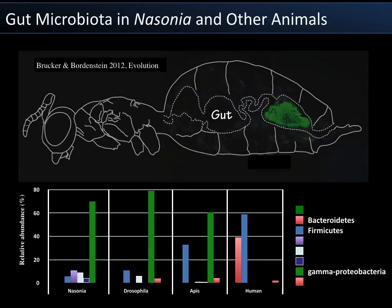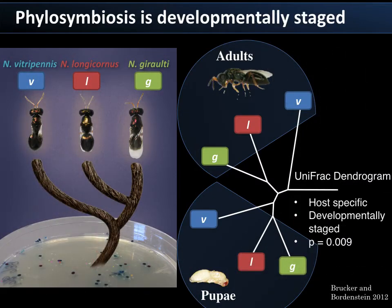Nasonia is what I'll spend the rest of the time discussing. A cross-section of the Nasonia abdomen stained for proteobacteria in green shows they tend to localize in the hindgut in adult stages. Proteobacteria are common in insects — also in Drosophila and Apis honeybees — contrasting with mammalian animals which have lots of Firmicutes and Bacteroidetes. Taking microbial communities from each of the three species at different developmental stages, we find a pattern of phylosymbiosis that is developmentally staged: pupae show a phylosymbiotic pattern, and adults have their own phylosymbiotic microbial community slightly different from the pupae.